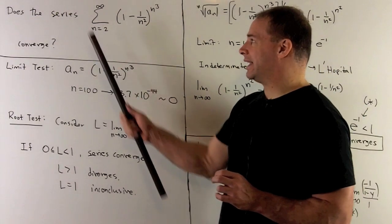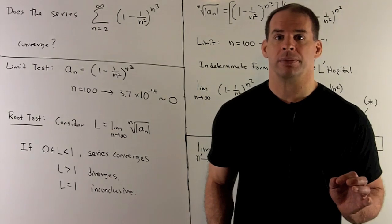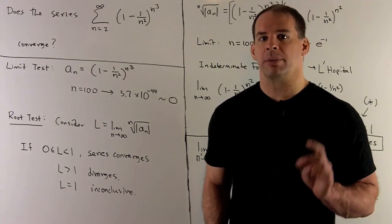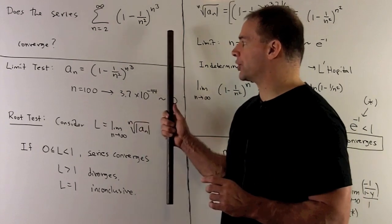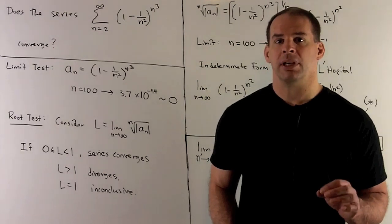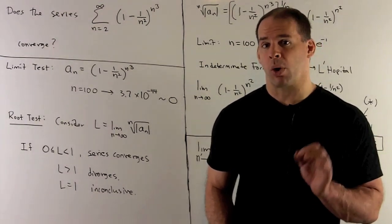Now, this seems like an unlikely candidate for convergence, so let's see if it makes it past the limit test. The idea is we take the limit of our general term. If that doesn't go to 0, it automatically diverges. If it goes to 0, then we need to do more work.